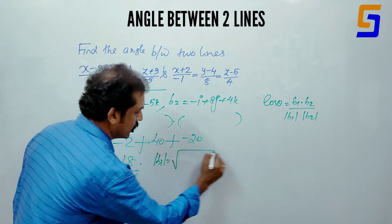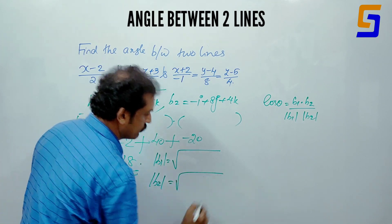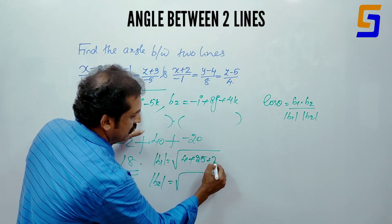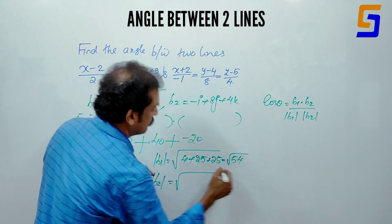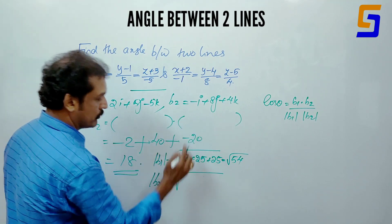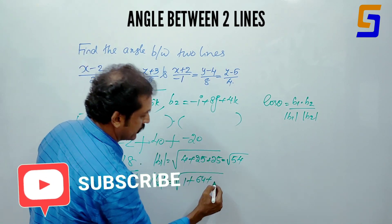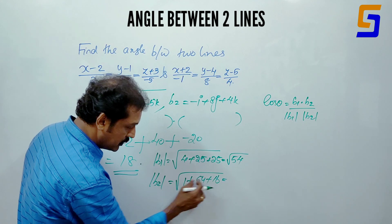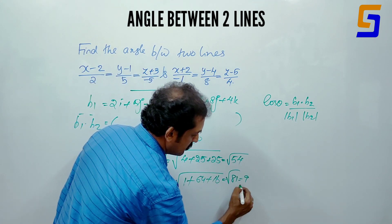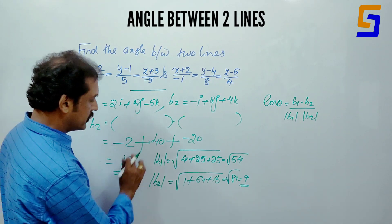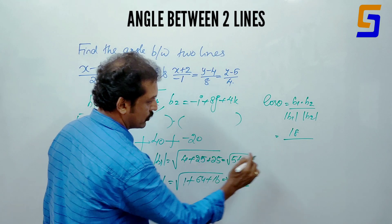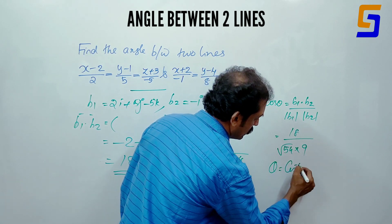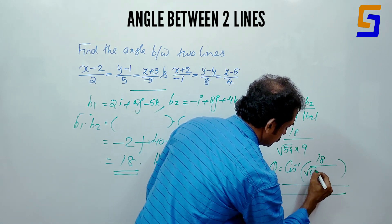Modulus b1 is root of (4 plus 25 plus 25) equals root of 54. Modulus b2 is root of (1 plus 64 plus 16) equals root of 81, which is 9. Substituting: 18 divided by (root 54 into 9). Therefore theta equals cos inverse of that value.